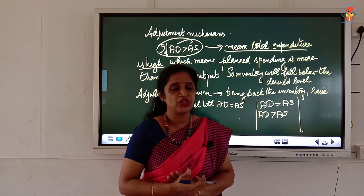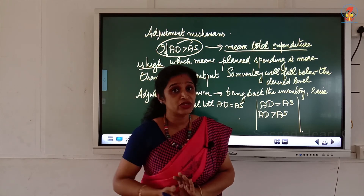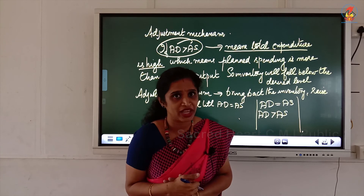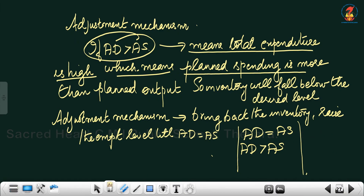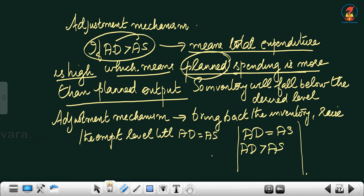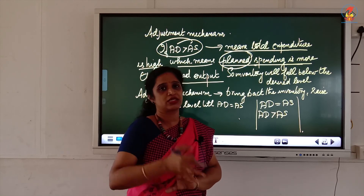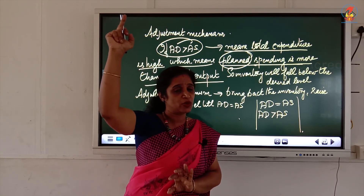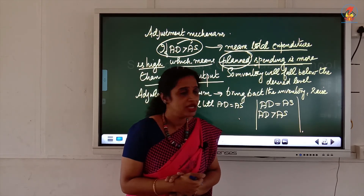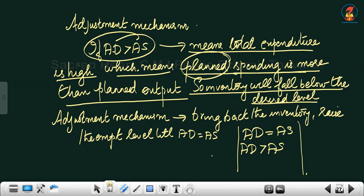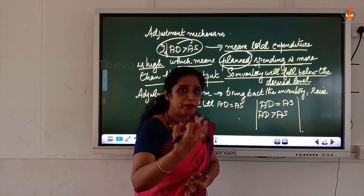When AD is greater than AS, planned spending is more than planned output. People are planning to buy more than what is being supplied in the economy, so inventory will fall below the desired level. Suppliers do not have enough to meet aggregate demand, meaning the inventory level has fallen below what is desired.